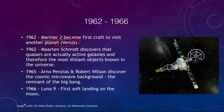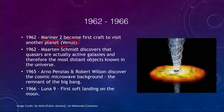Also in 1962, Martin Schmidt was able to discover that quasars are actually active galaxies and therefore the most distant objects known. Quasars — quasi-stellar radio sources — looked like stars but were eventually found to be supermassive black holes accreting a lot of material and giving off tremendous amounts of energy, tracing out to 10 billion light-years or more away.